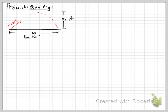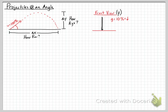We're going to look at this from two different views. The front view is as if the ball goes straight up and comes straight back down — that's all in the y-direction. Looking at it from the front, gravity acts at 10 m/s² downward. Since this is a 30-degree angle, the velocity in the y-direction is the hypotenuse times the sine of the angle, which gives us 50 m/s upward. That makes gravity negative, so this is essentially a free-fall question for the y-direction.